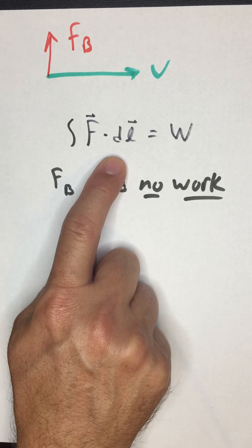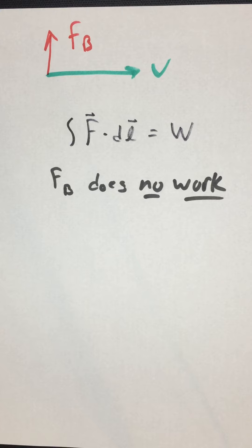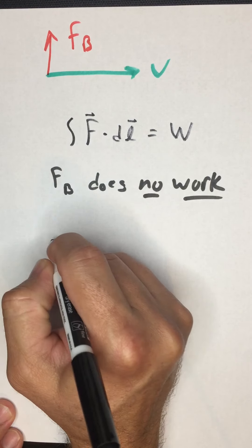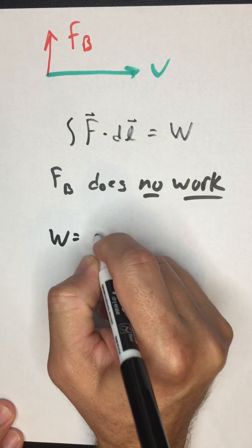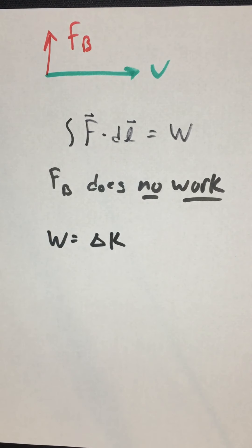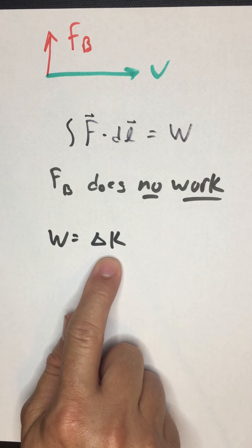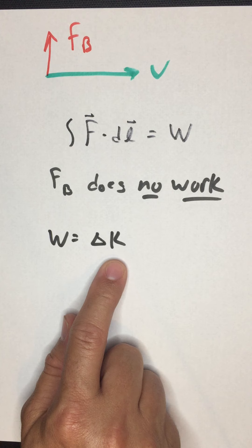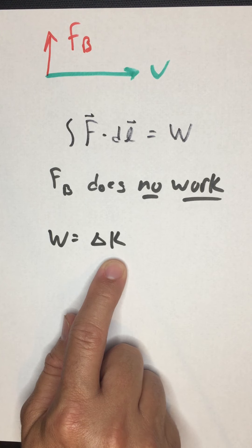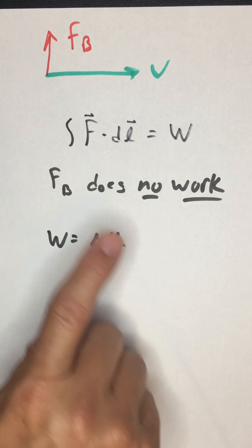The other way to think about that is to remember the work energy theorem. Work is equal to the change in kinetic energy. How does the kinetic energy change? The speed changes. This is not a vector equation. The change of velocity does not matter. The change in speed is what matters.